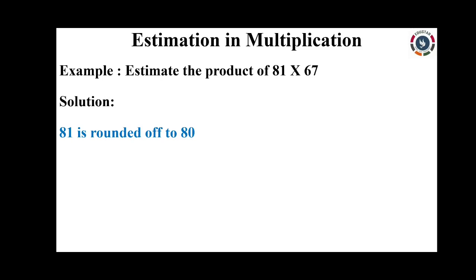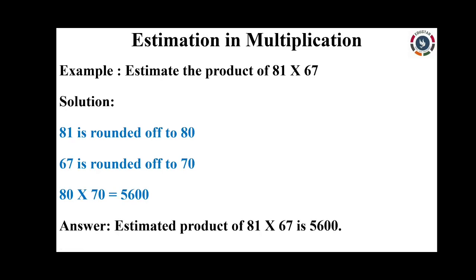The second number is 67. In 67, the ones digit is 7. Since 7 is greater than 5, replace the ones digit by 0 and increase the tens digit by 1. So 67 is rounded off to 70. Now multiply the estimated values: 80 into 70 equals 5600. The estimated product of 81 into 67 is 5600.